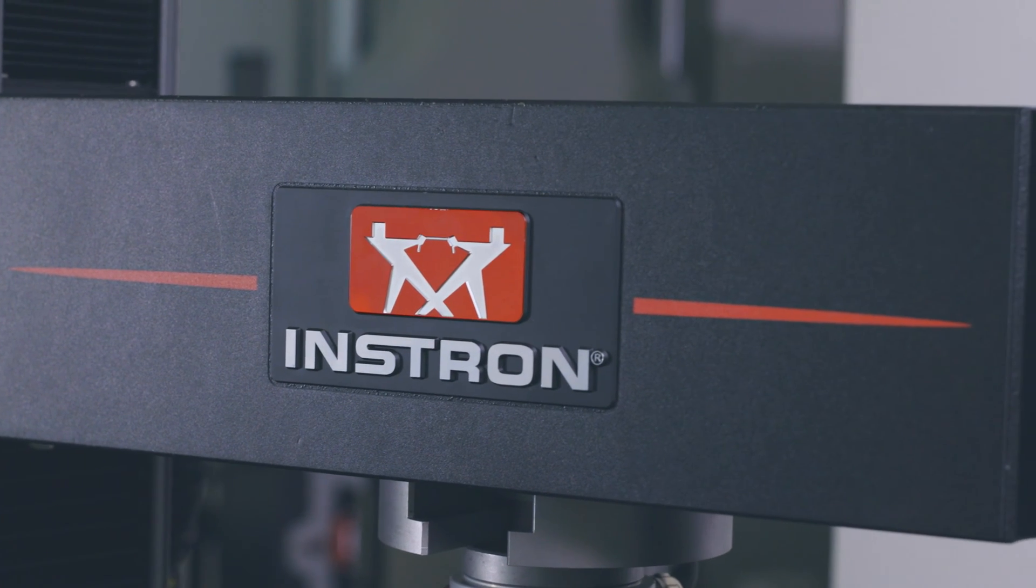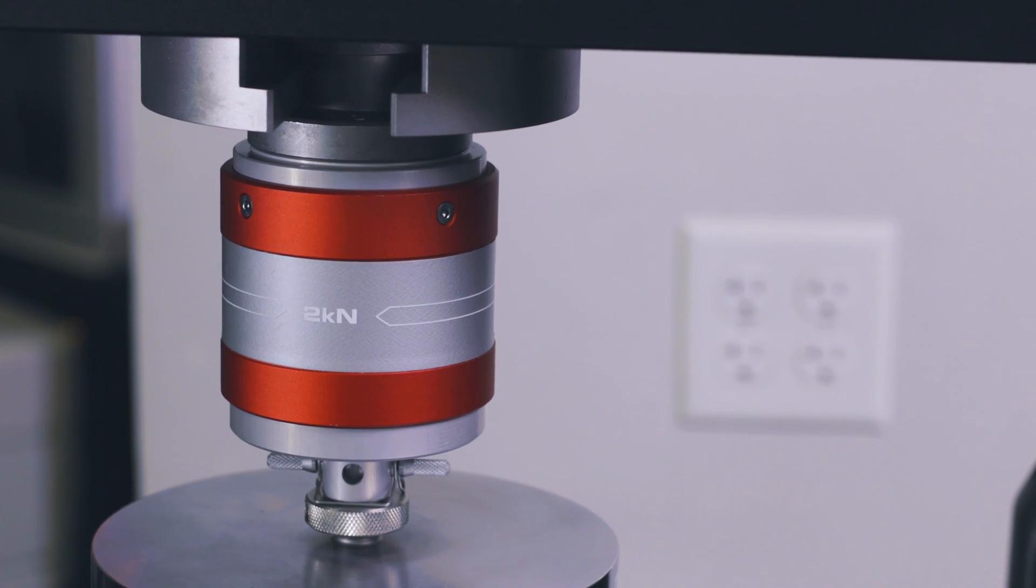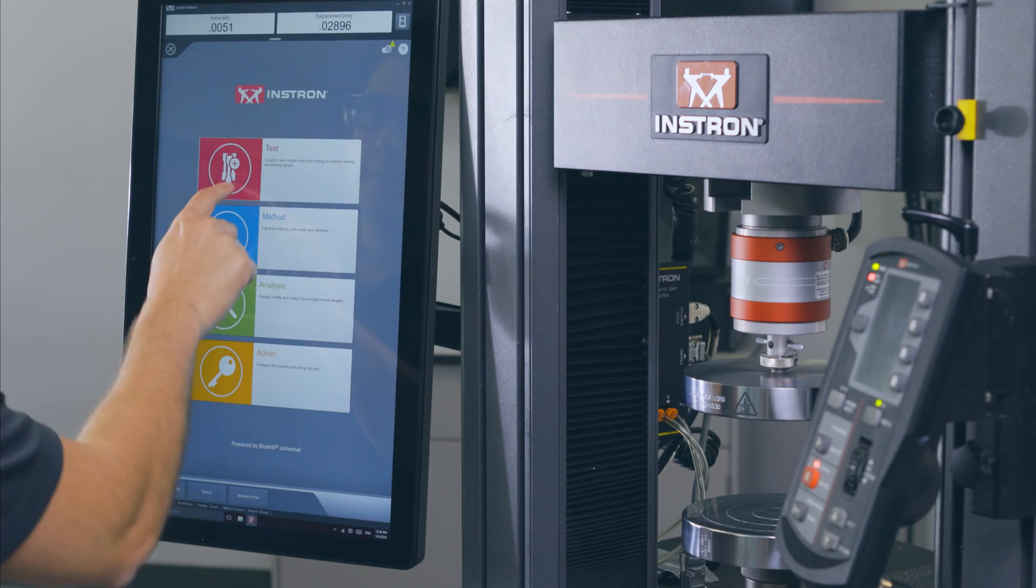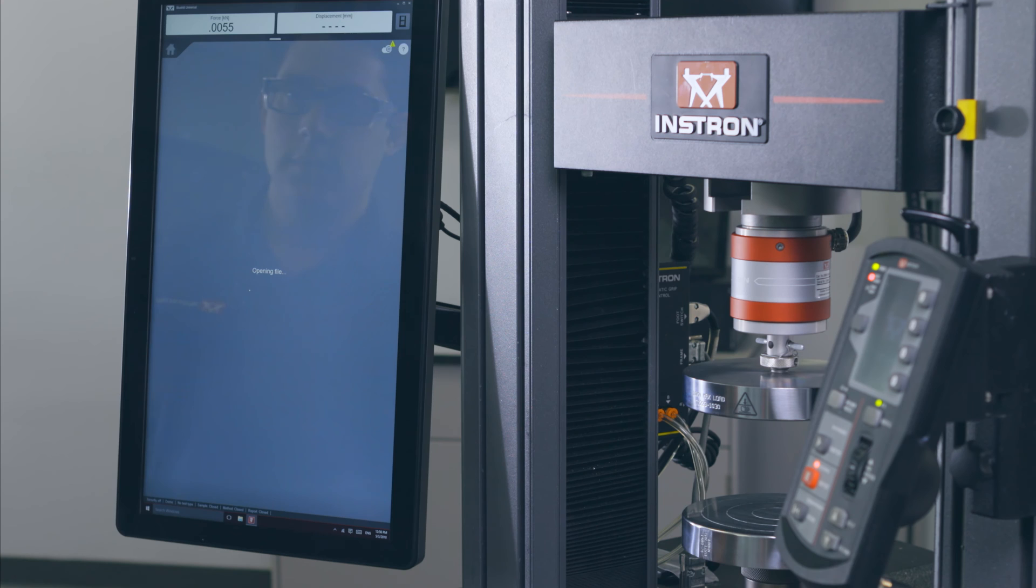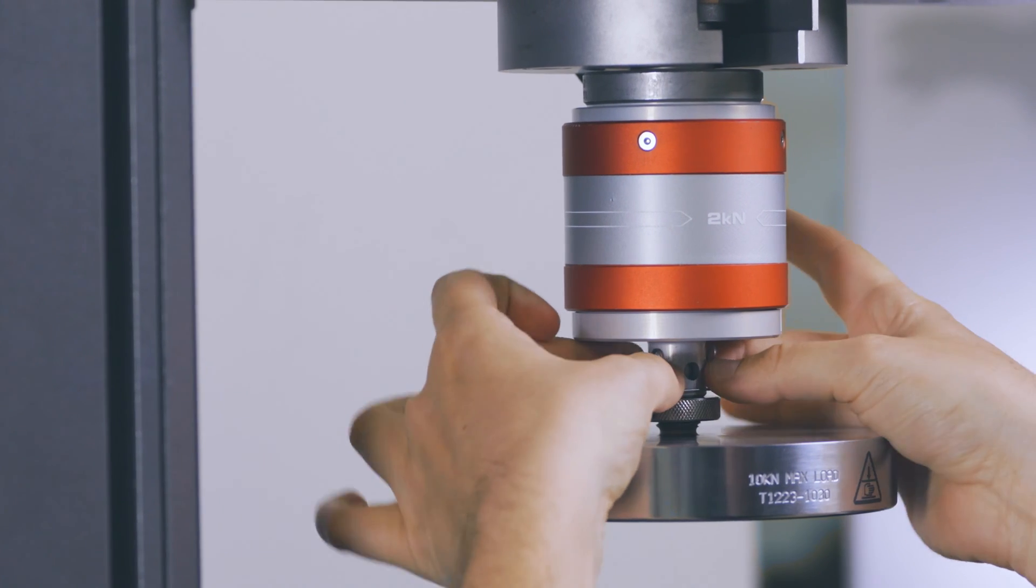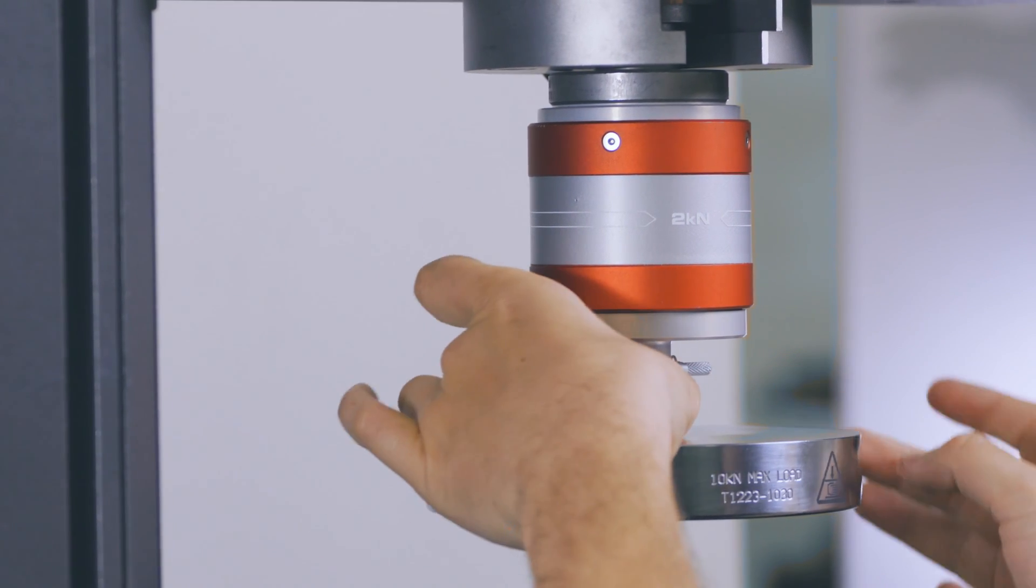The crosshead is the moving component of the system, which can move up or down depending on the test type. Load cells of various capacities can be attached to the underside of the crosshead. The Blue Hill software controls the motion of the crosshead and is used to develop and run test methods. This is a modular system with hundreds of grips and fixtures that can be attached to the machine with a simple pin and clevis connection.